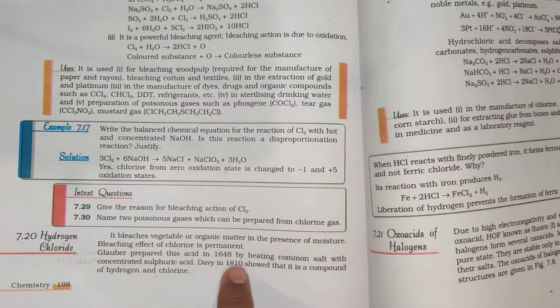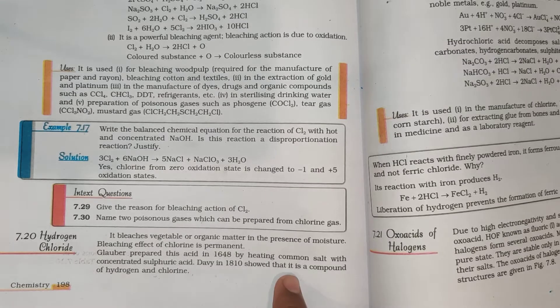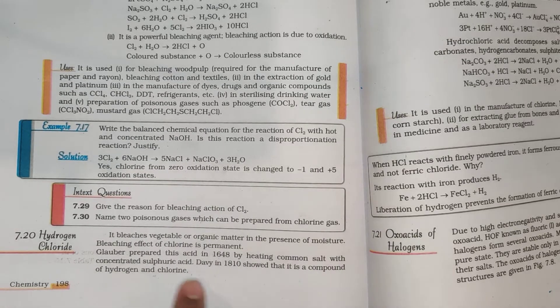Glober prepared this acid in 1648 by heating common salt with concentrated sulfuric acid. Davy in 1810 showed that it is a compound of hydrogen and chlorine.